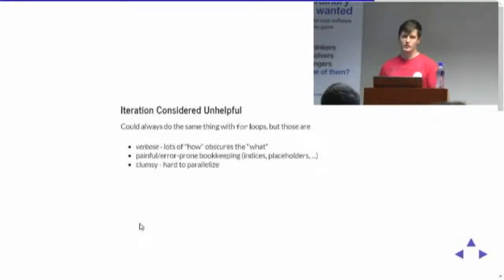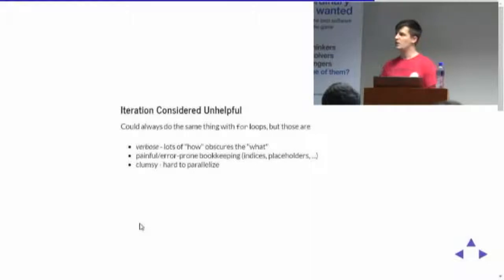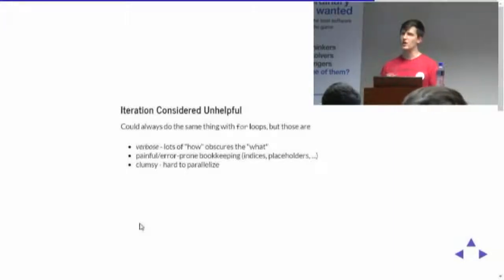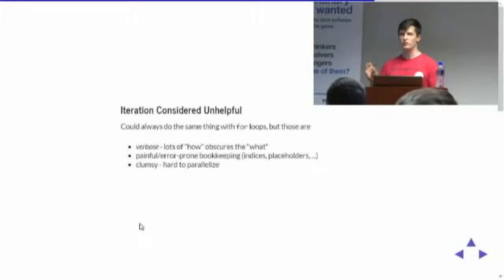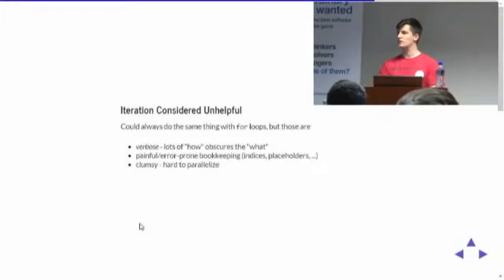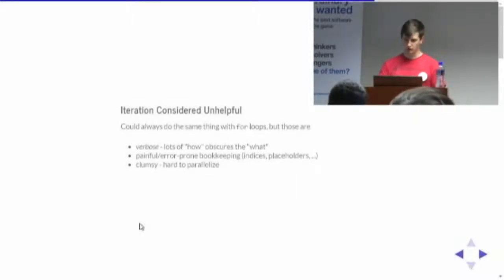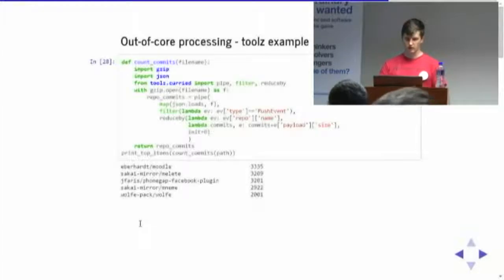We could do the same thing with loops, but the loop doesn't highlight where the map step is. It's quite important to see when a map step is, because the map often implies independence — that is very low-hanging fruit for parallelization. When you know you've got a map somewhere, you can quite often parallelize your data pipeline trivially without doing much work.